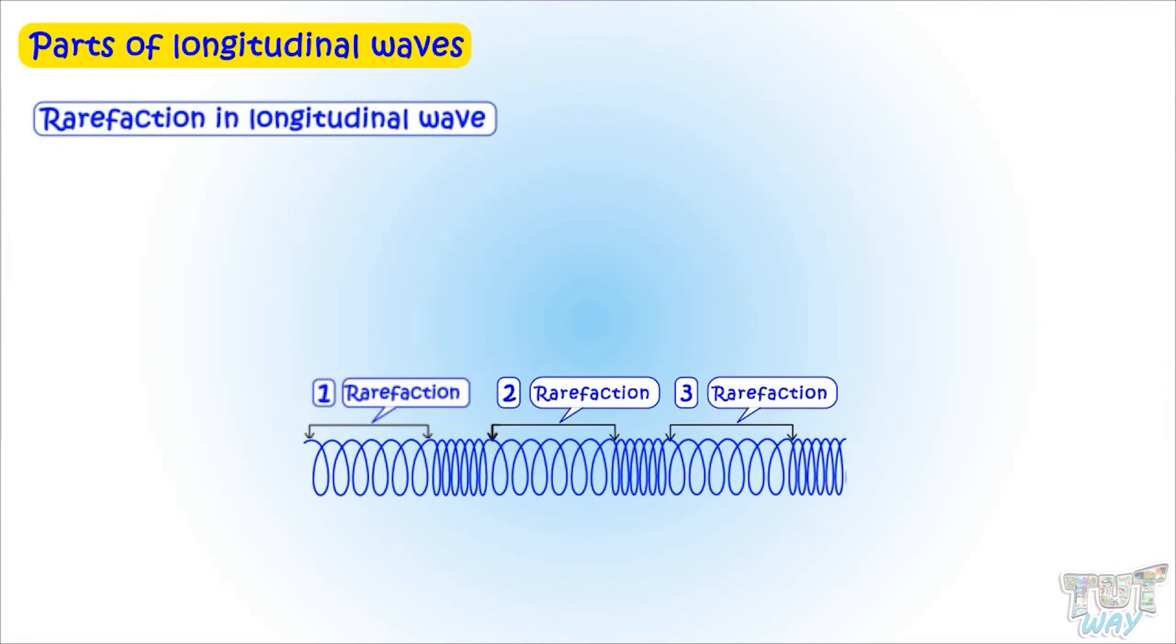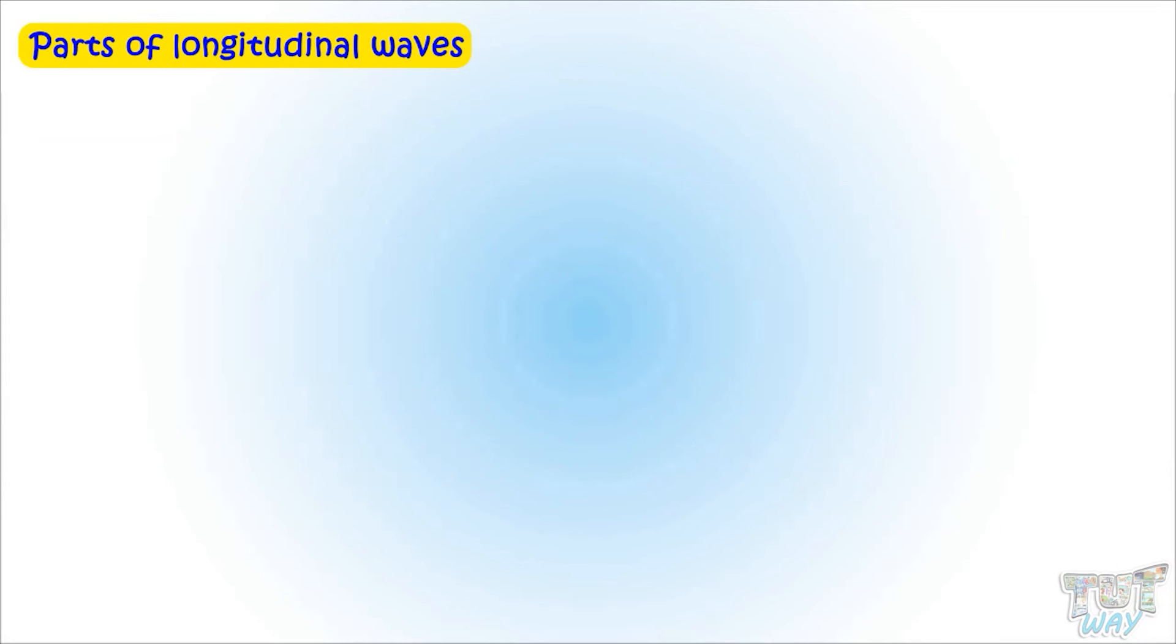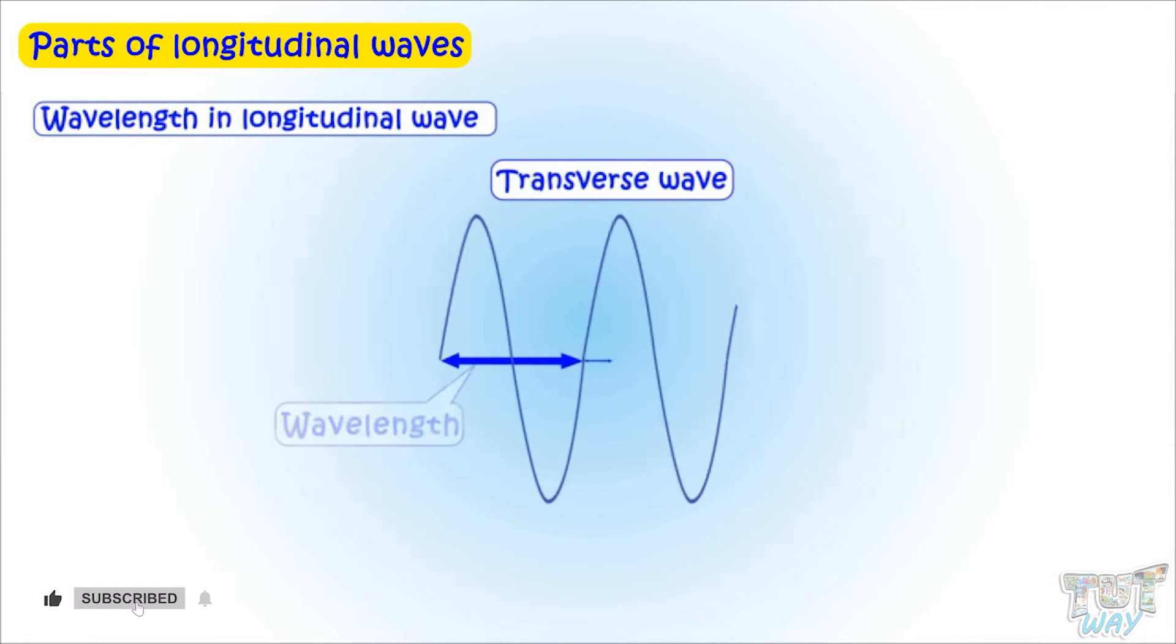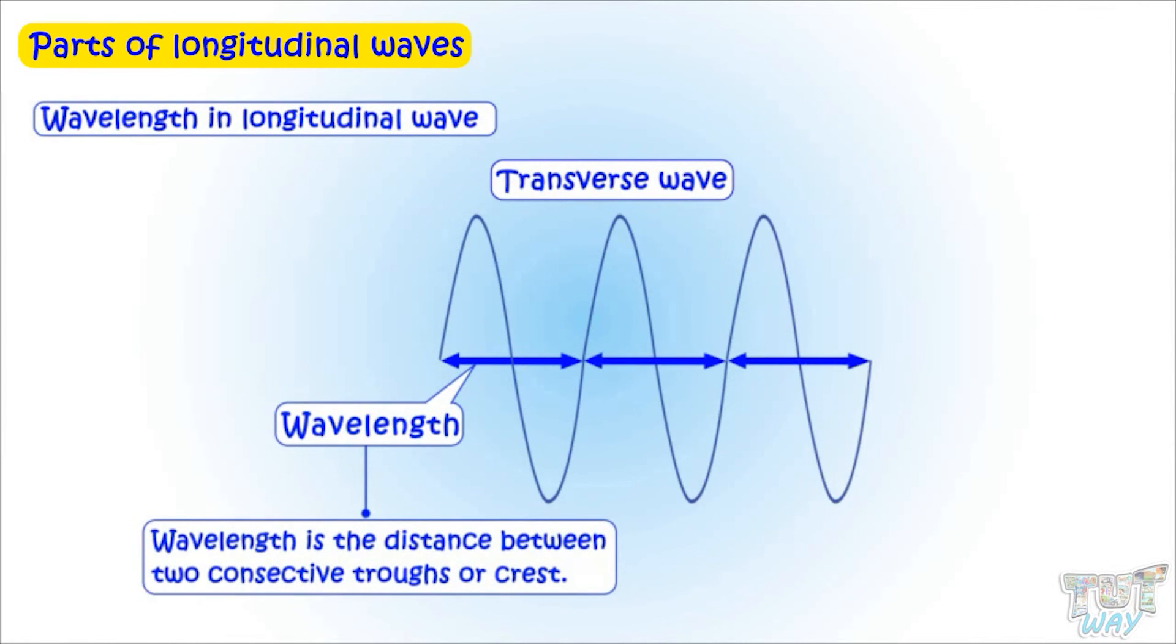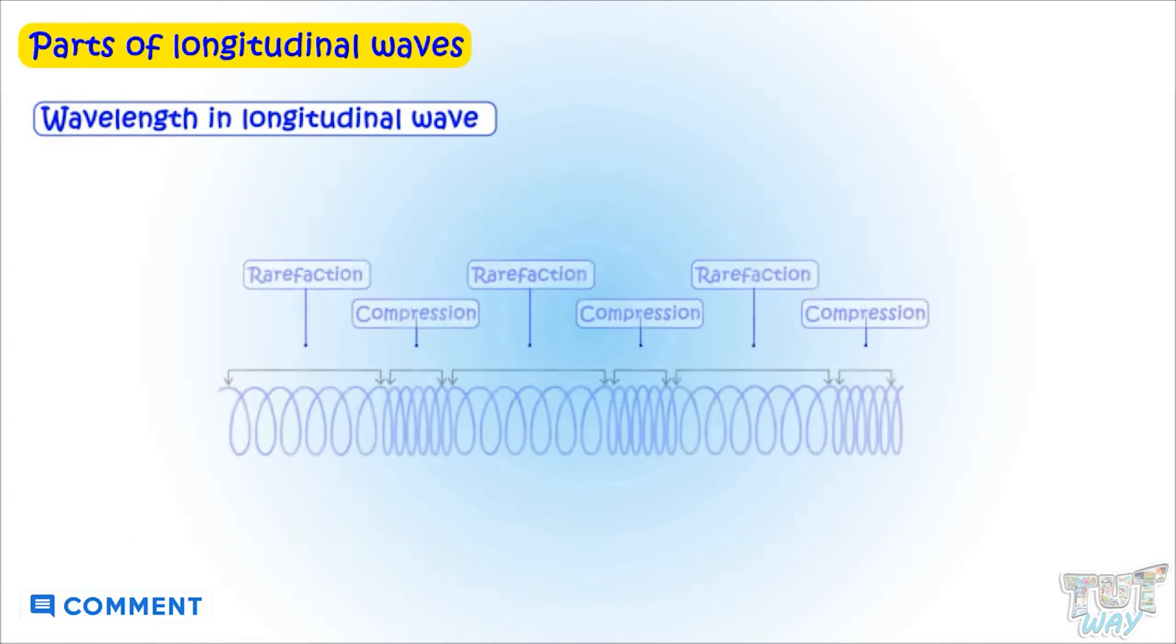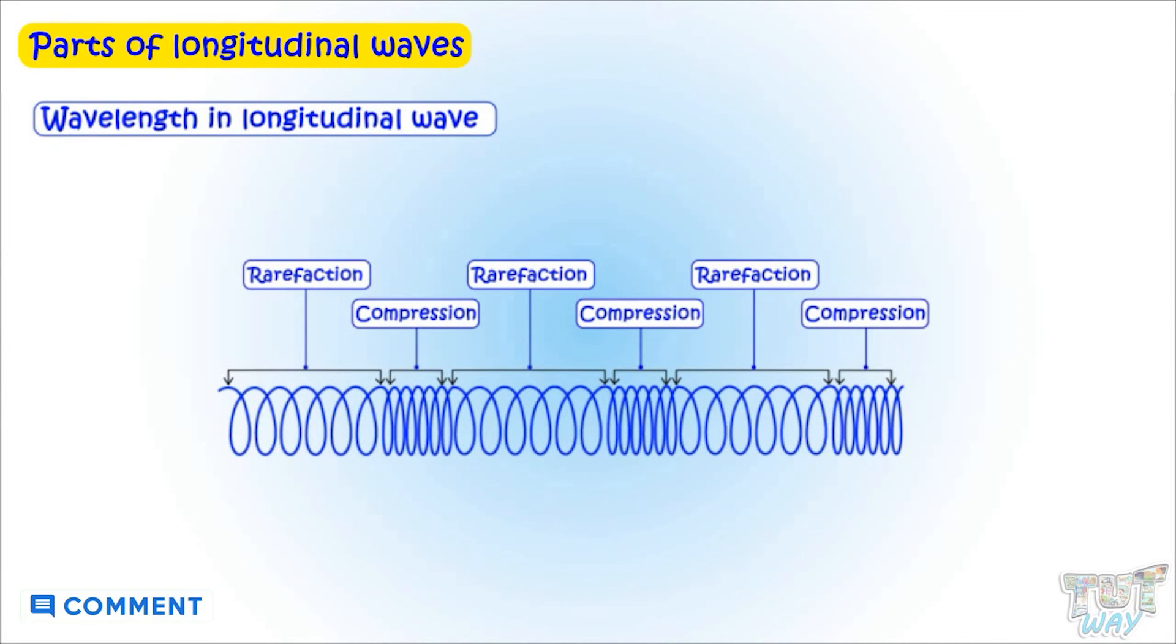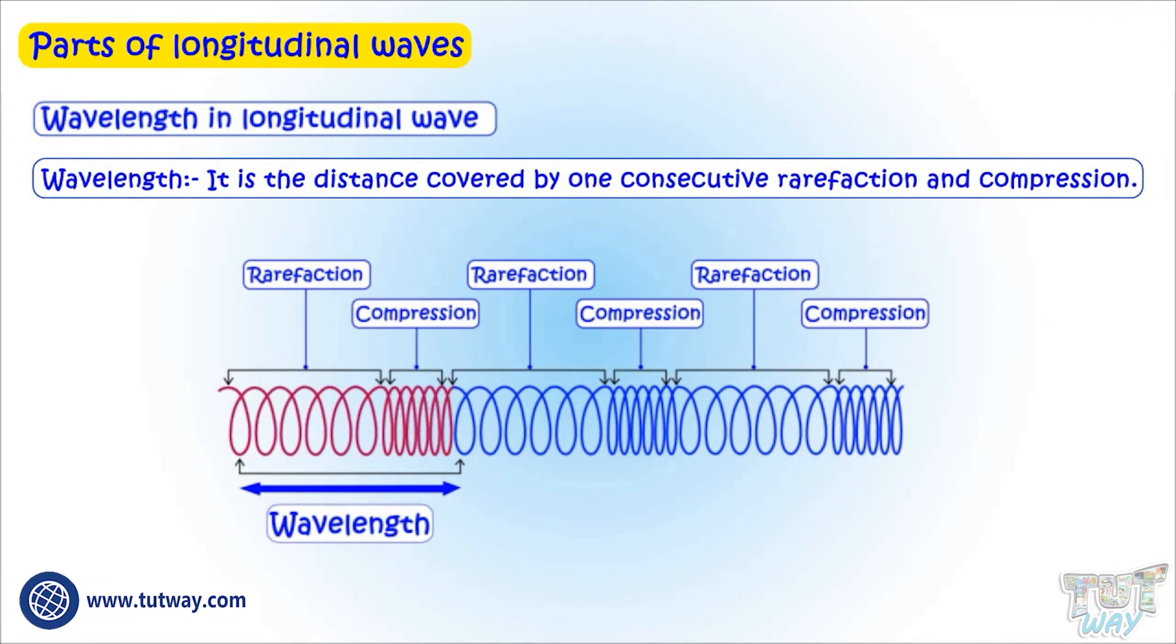Next is wavelength in longitudinal wave. Like we learned in case of transverse wave, wavelength is a distance between two consecutive troughs or crests. Similarly, in longitudinal waves, wavelength is a distance between two consecutive rarefactions or two consecutive compressions.